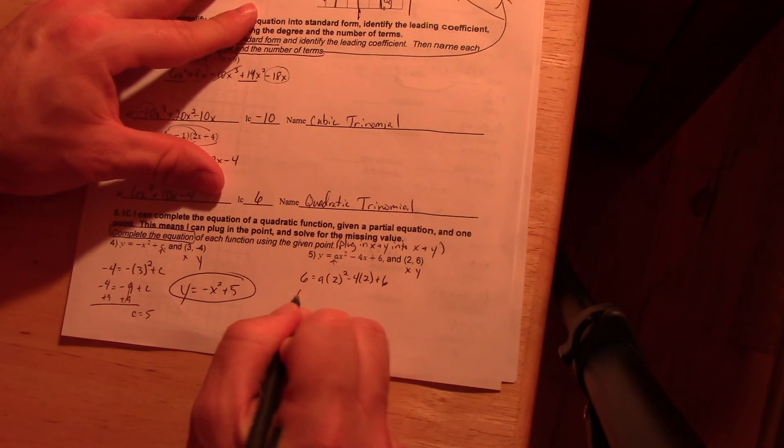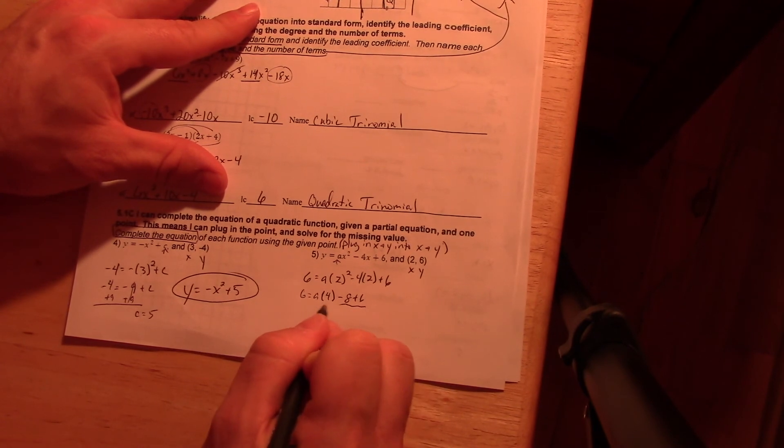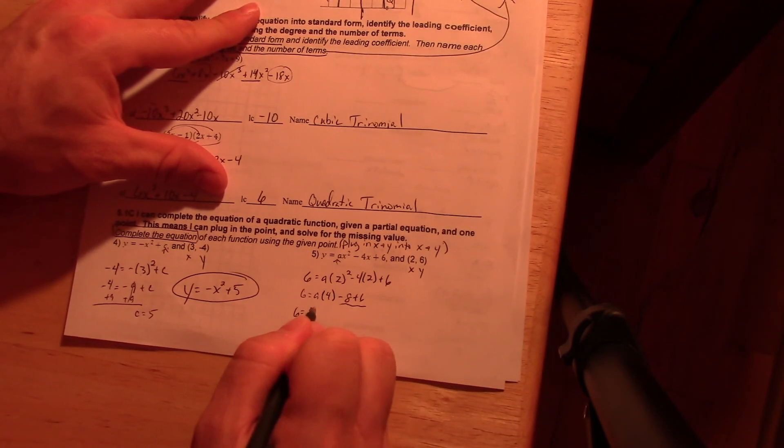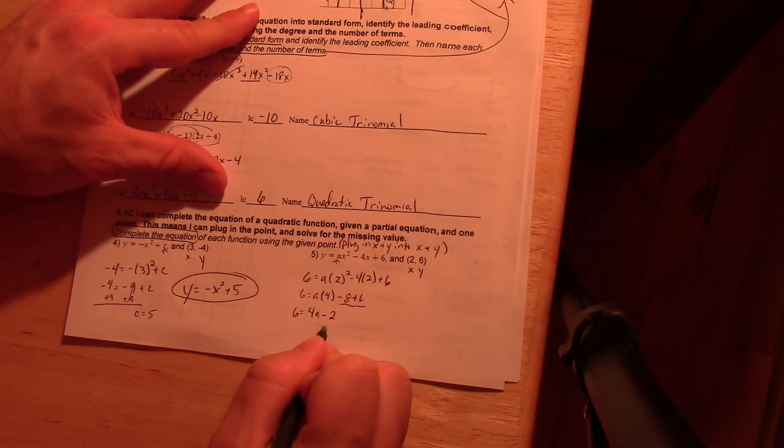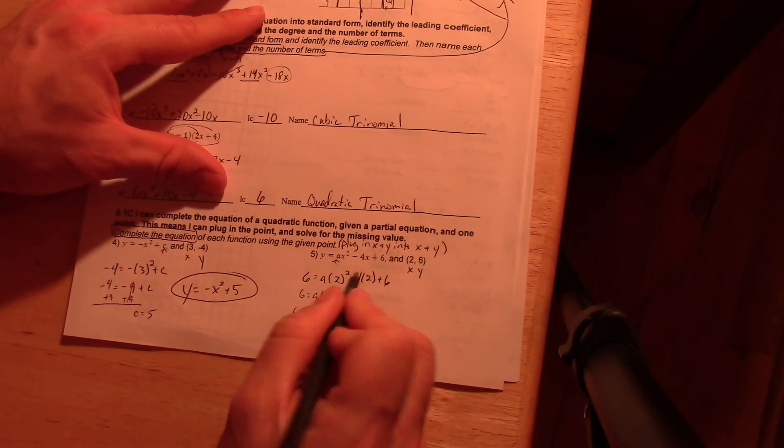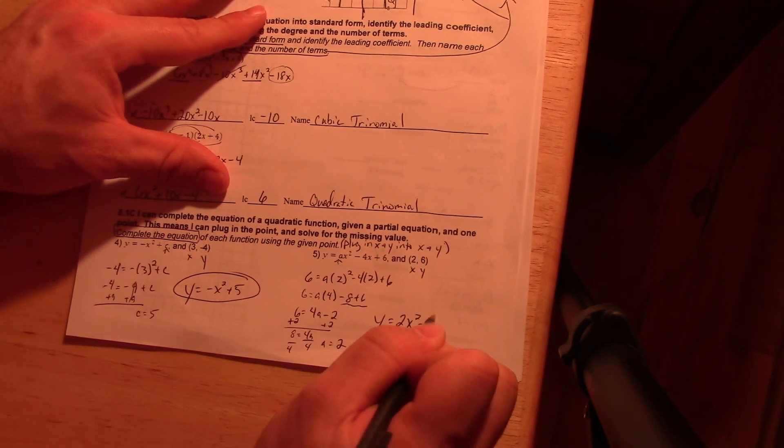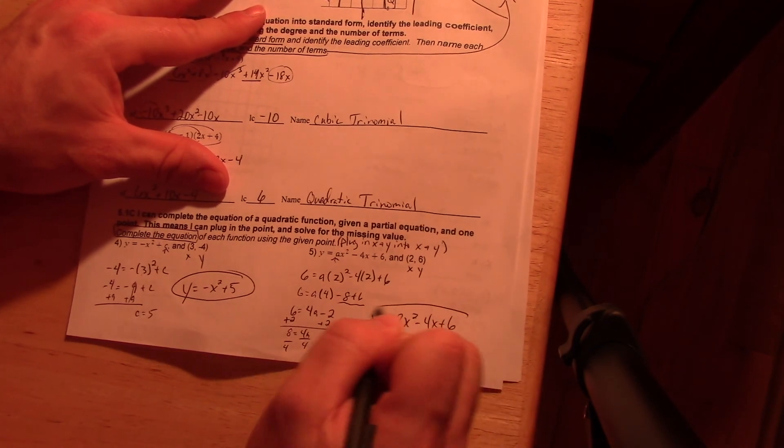And I've got, let's see, 6 equals a times 4 minus 8 plus 6. I can combine these two like terms here. And I'm going to kind of switch these two around just so it looks like something we're used to. And then this is just a two-step equation. You should know how to do this. It's two and I go back in and just plug it in.